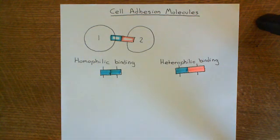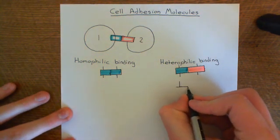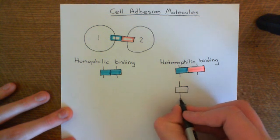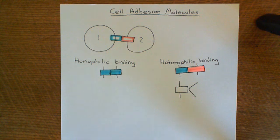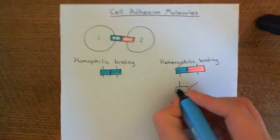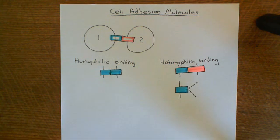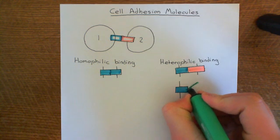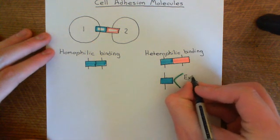Cell adhesion molecules don't just bind to other cell adhesion molecules on other cells — they also bind to the extracellular matrix. When you've got a cell adhesion molecule binding to the extracellular matrix, that's also considered heterophilic binding. The extracellular matrix you can imagine as a dense spider's web that surrounds each and every cell, structuring the interstitial space. Here's the cell adhesion molecule in blue, attached to a certain protein involved in the extracellular matrix, shown in green.